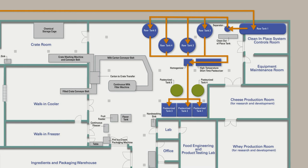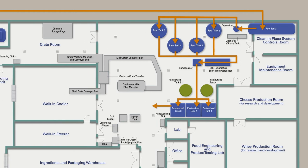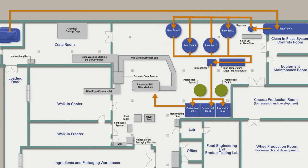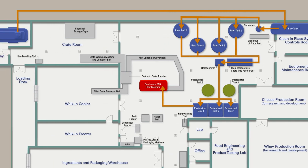The pasteurized milk then flows from Pasteurized Tanks 1, 2, and 3 to the milk container filling machine, which packages the milk into containers. The individual milk containers then move down the conveyor belt to the crate filler, where the pints are mechanically placed into crates for easy stacking during storage.